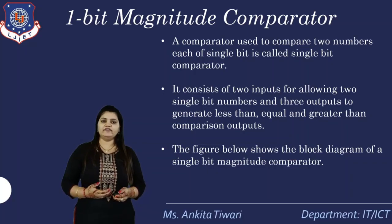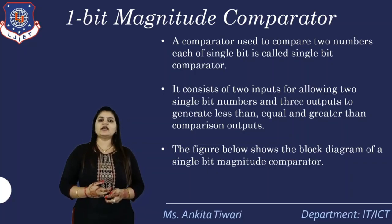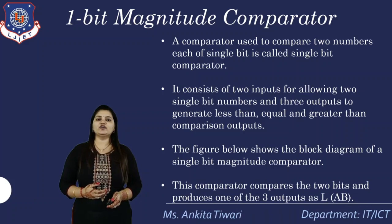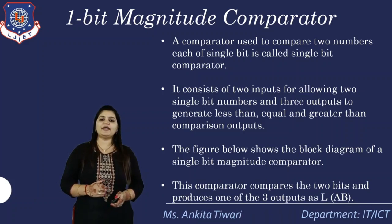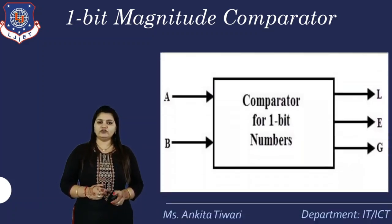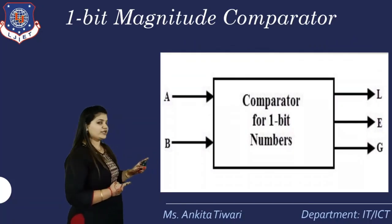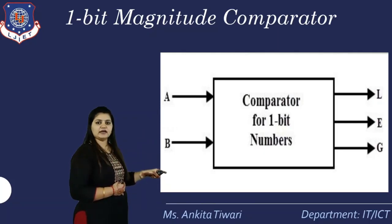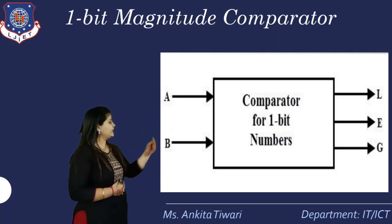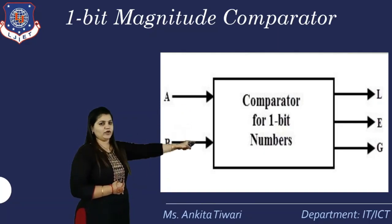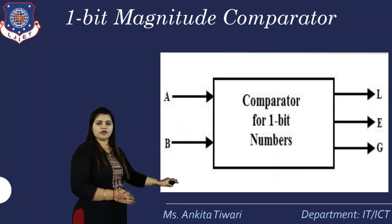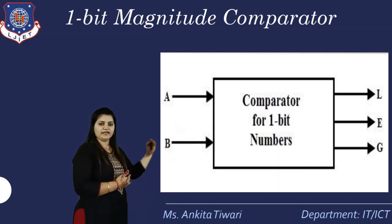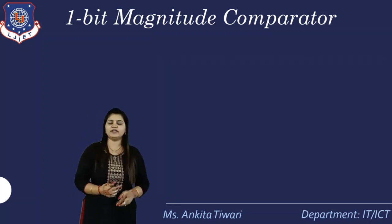Here we have a figure showing the block diagram of single-bit magnitude comparison, which compares two numbers. In this block diagram, two inputs — a and b — are given, and we get three outputs: less than, equal to, and greater than. This is the one-bit comparison block diagram.